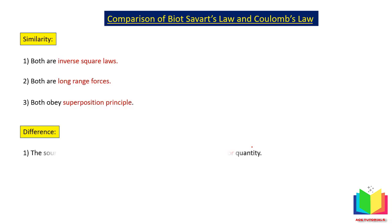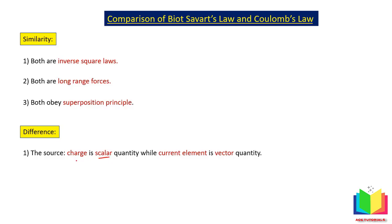Now the points of difference. First: in Coulomb's law, the charge is a scalar quantity, while in Biot-Savart's law the current element — the source of the magnetic field — is a vector quantity. So the source of electric field is scalar, while the source of magnetic field is a vector.